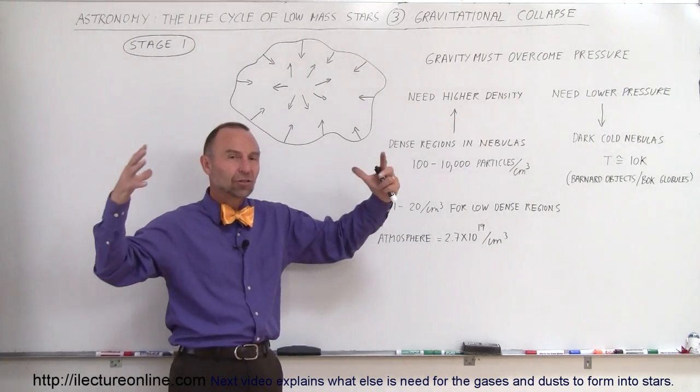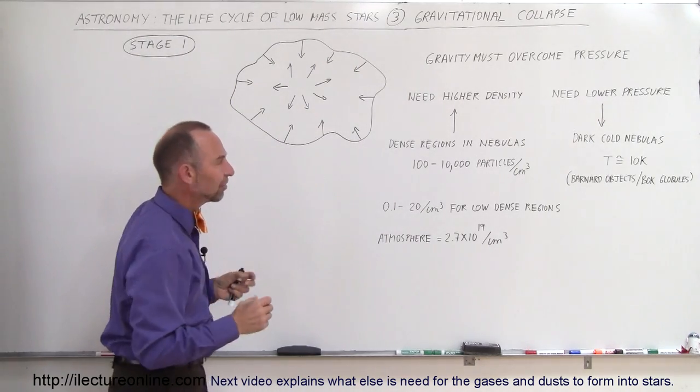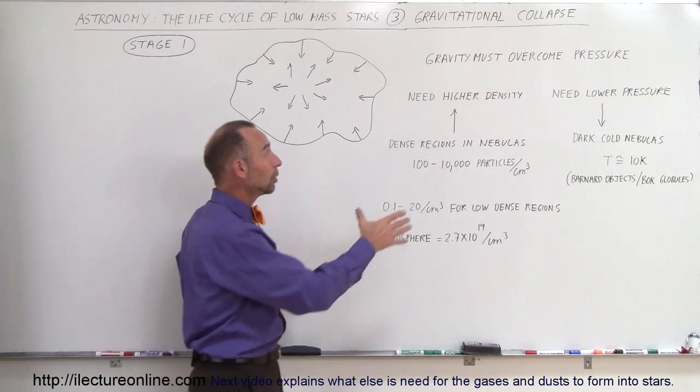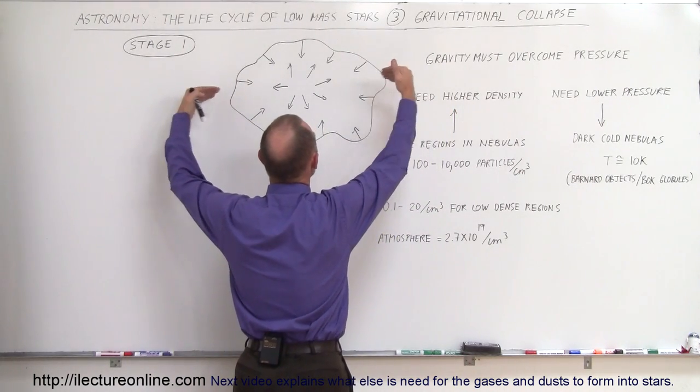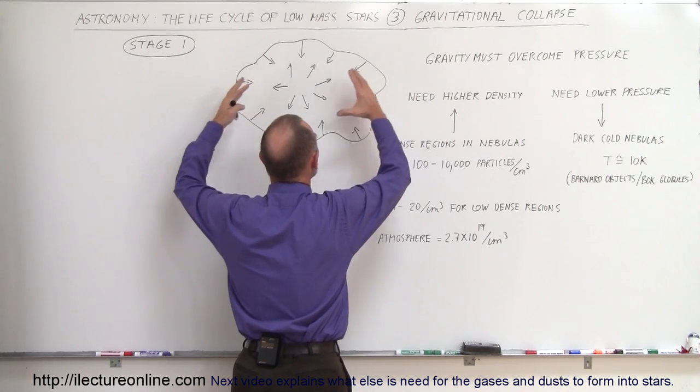So, what do you need to take a dust cloud of gas, a cloud of gas and dust like this and turn into a star? Well, first of all, you need higher density. You need as high density as possible so that gravity can force the density to be even greater.